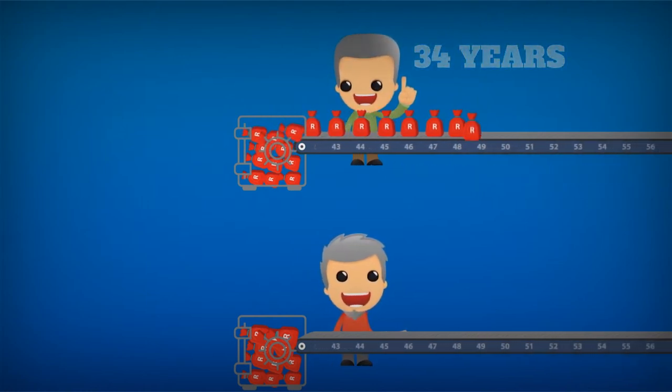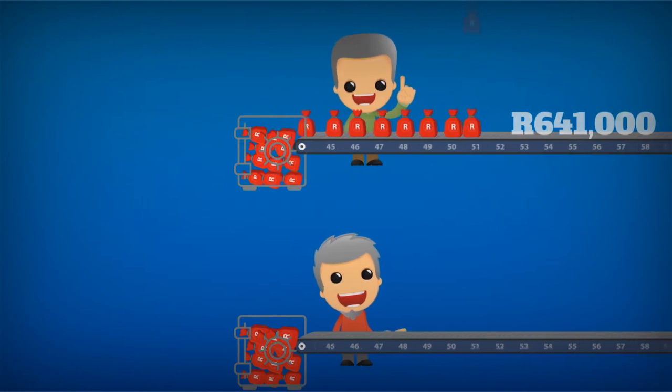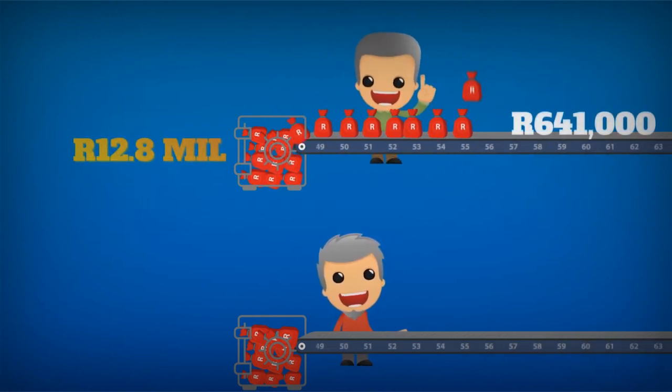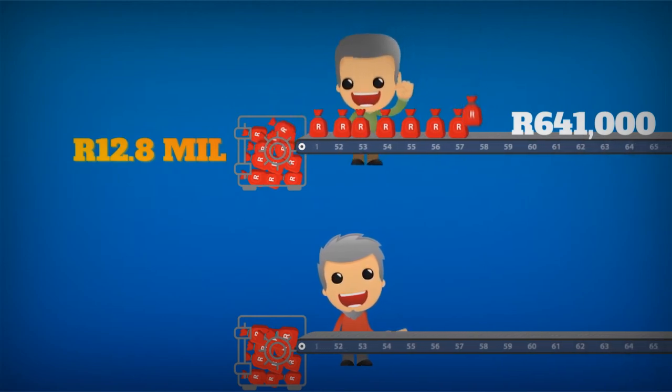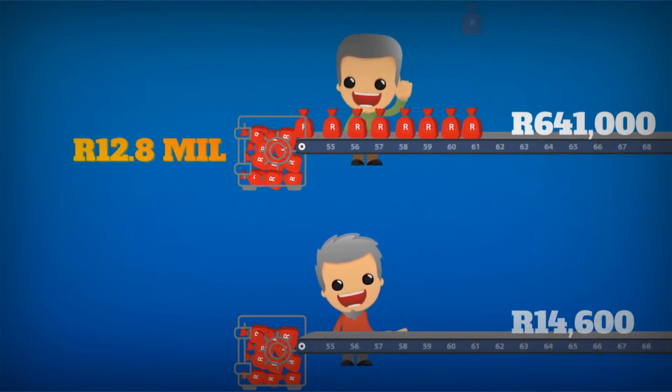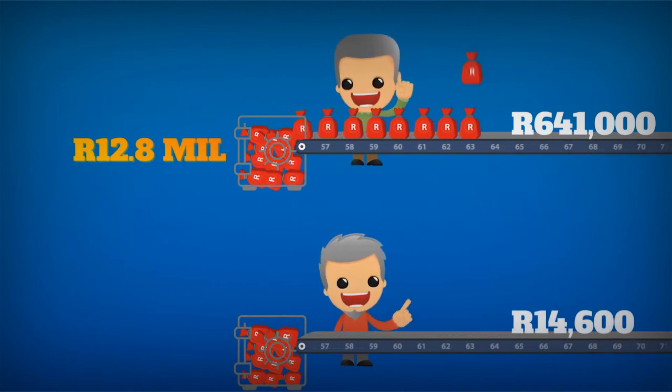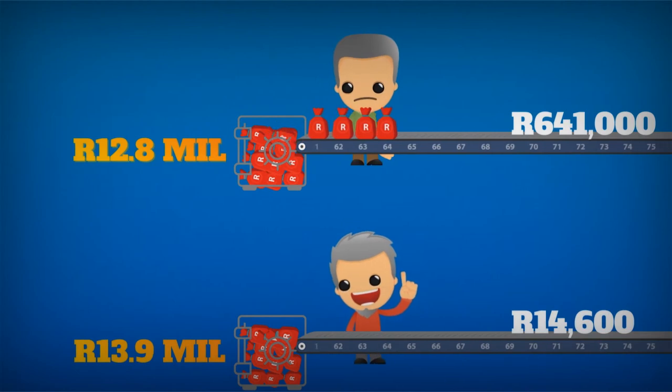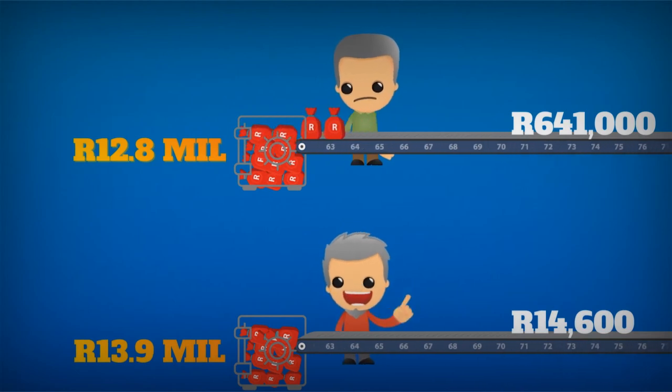At age 65, Vigo has contributed 641,000 Rand and his investment has grown to 12.8 million Rand. Mike? He contributed a meager 14,600 Rand over the same period. His sum total at age 65? 13.9 million Rand. Yup.